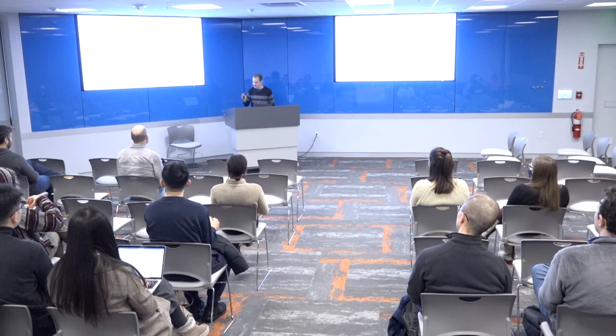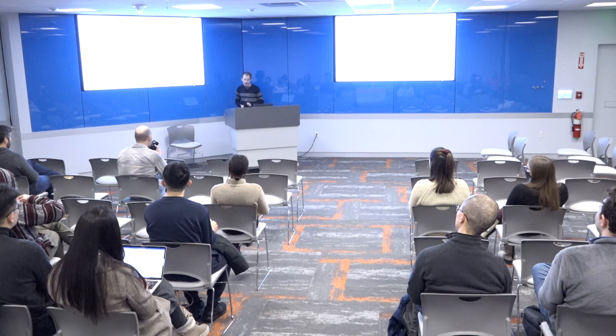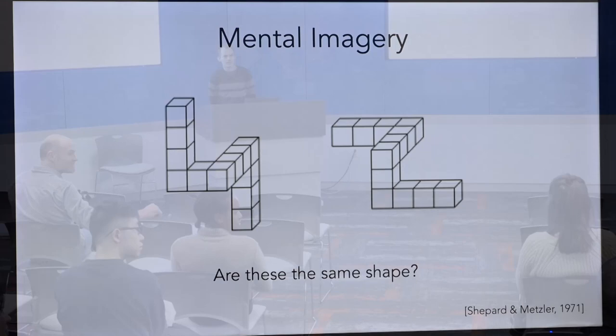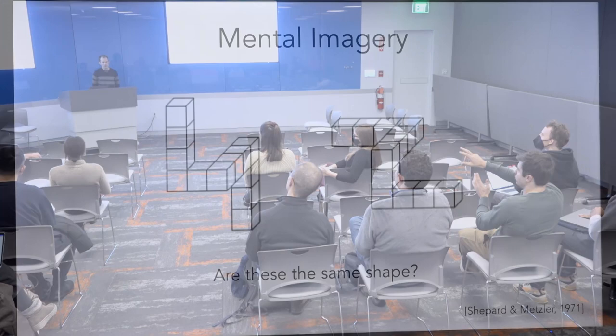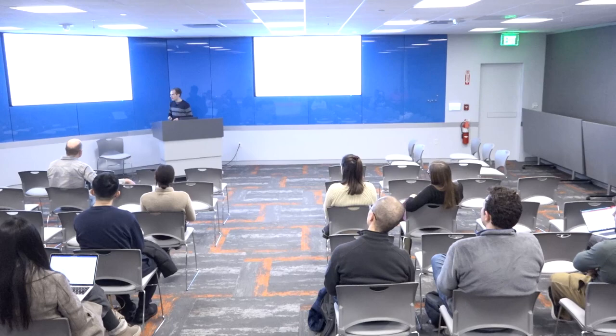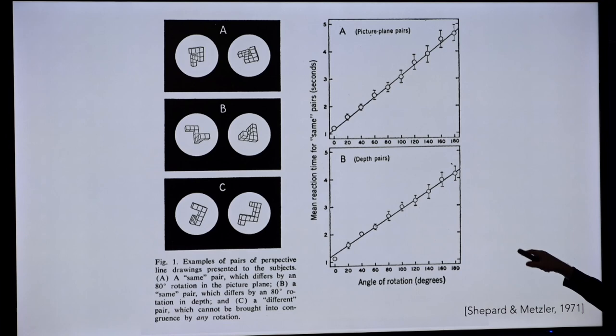Who thinks they're different? Okay, everybody thought they were different — they are different in this case, but it's a little hard to see. Can anyone tell me what your reasoning process was? How did you try to answer that question? — I first tried rotating the image on the right so that each of the bottom two points were down, about 90 degrees in either direction, and then noticed that the three-block middle portion could not correspond with the three-block middle portion on the left. — Yeah, the key word there is you imagined the shape rotating. You imagined this physical process, and that's what people tend to report.